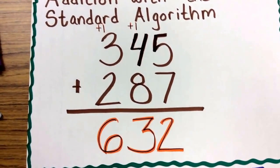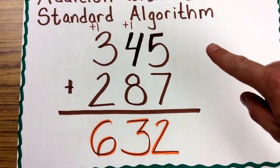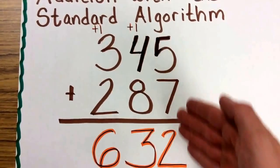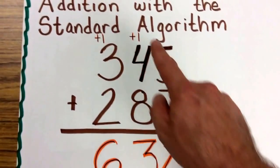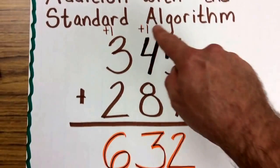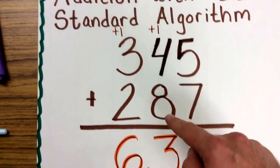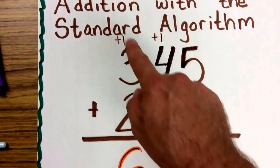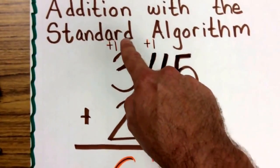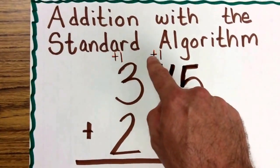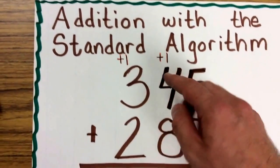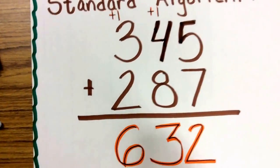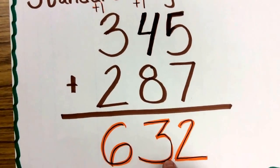When we do the standard algorithm, it usually requires us to place a greater number on top of a lesser number, then begin to add the ones place to the tens place to the hundreds place, making sure to regroup as we go along. When we add 345 plus 287, we start in the ones place. Five plus seven is twelve. We write a two in the ones place and carry a group of ten. One plus four plus eight ends up being thirteen. We put a three in the tens place and carry a group of one hundred.